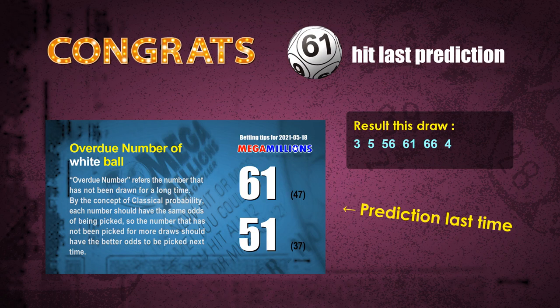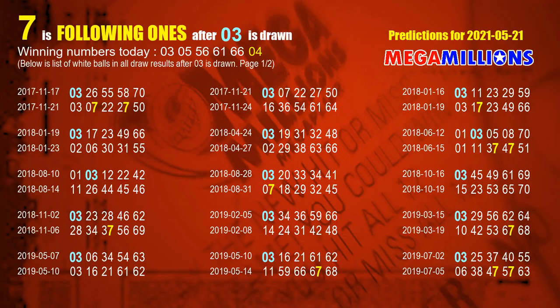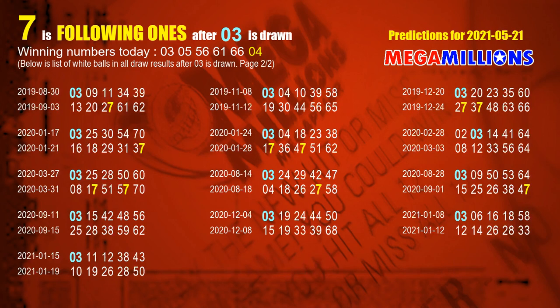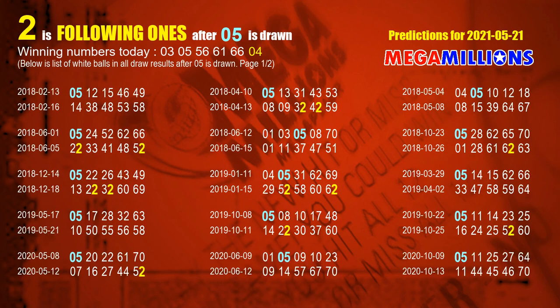Now I'll show you how to find winning numbers for the next draw step by step. First, let's find the following units digits through today's result. Following numbers refer to those numbers picked on the next draw after this one. The first white ball is 03. We list all draw results after a draw with 03 as a winning white ball — the most frequently following units digit is 7.